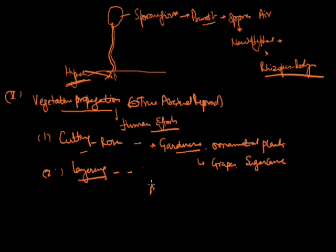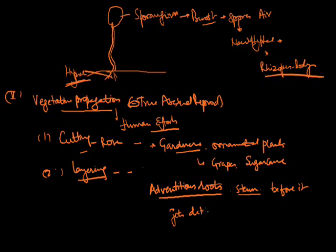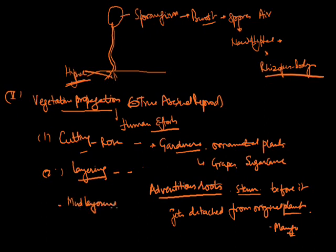In layering, the development of adventitious roots is induced on a stem before it gets detached from the original plant. For example, in mango, mud layering is a type of layering which utilizes specifically leaves such as in Bryophyllum, where the leaves are buried and they give out adventitious roots which produce a new Bryophyllum plant.